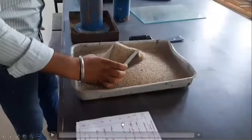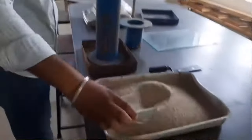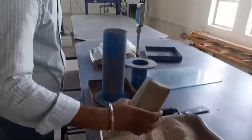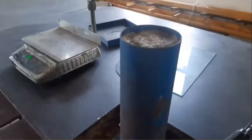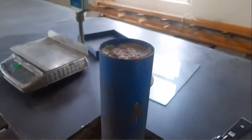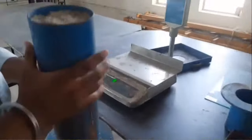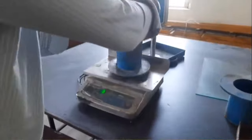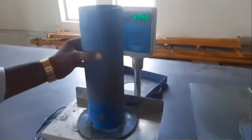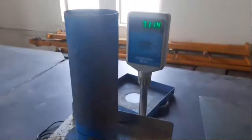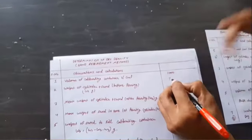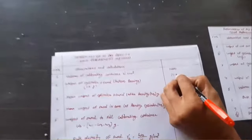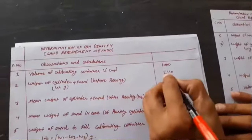Now, first of all, fill the sand pouring cylinder with calibrating sand — fill to within about 10 mm of its top. Weigh the sand pouring cylinder with the sand and record in the observation sheet. Its weight W1 is 7110 grams.